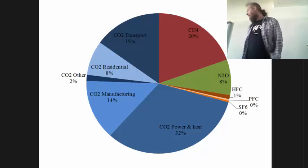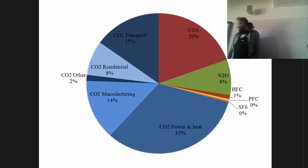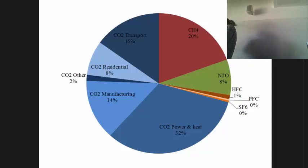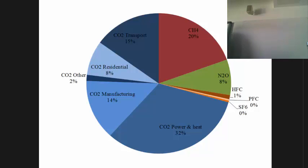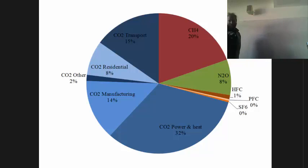CO2 in itself is also fairly diverse. The biggest source of CO2 emissions is power generation, particularly power but also heat — that's 52%. After that, transport is 15%. A lot of CO2 is used in manufacturing, 14%. In our homes, apart from power and heat, it's 8%. This is industrial heat by the way, and this is mostly residential heat, with other sources as well.